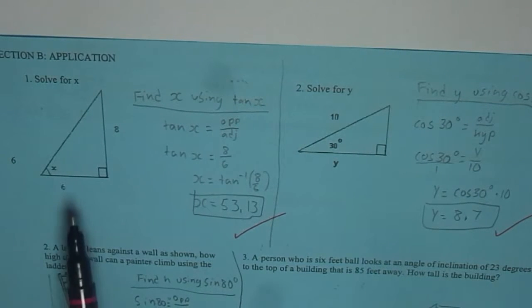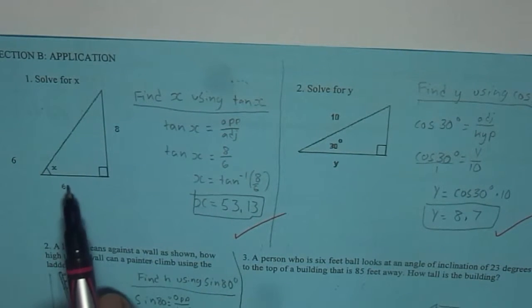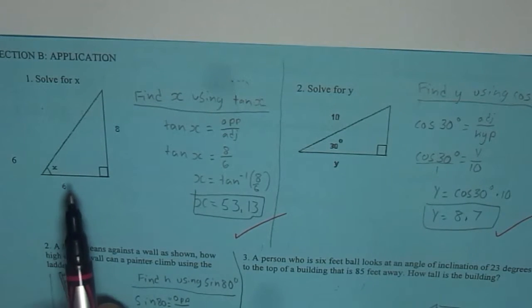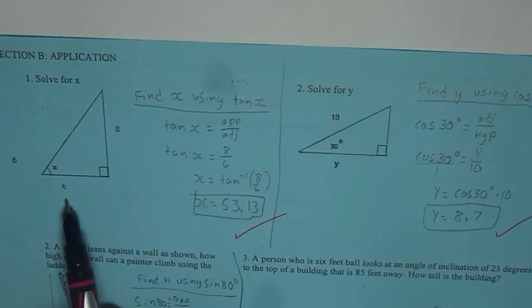The first question here is a triangle in which we need to find the angle. We are given opposite and adjacent side to find the angle you should be using tan. Tan of x and then x will be tan inverse of the ratio 8 over 6.